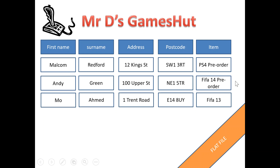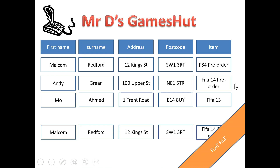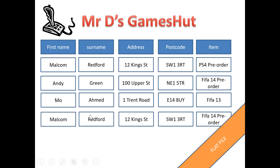Mo Ahmed calls up and he makes his order. Then we get Malcolm Redford call again and he's decided that he would like a FIFA 14 game for his PS4. What you'll notice happens in the flat file is that when Malcolm Redford calls up and makes another order, because this is a flat file system, I have to take down all of his details again and store his details as a separate record in my database, even though it's just the item that has changed.